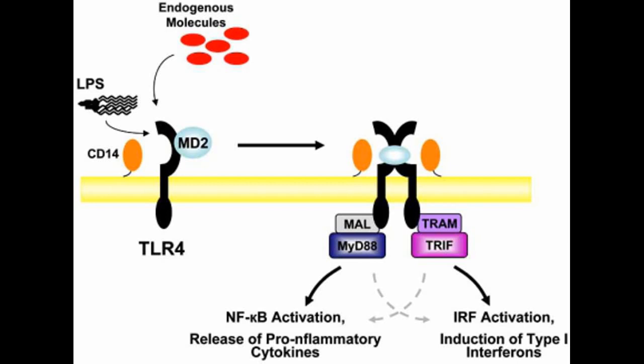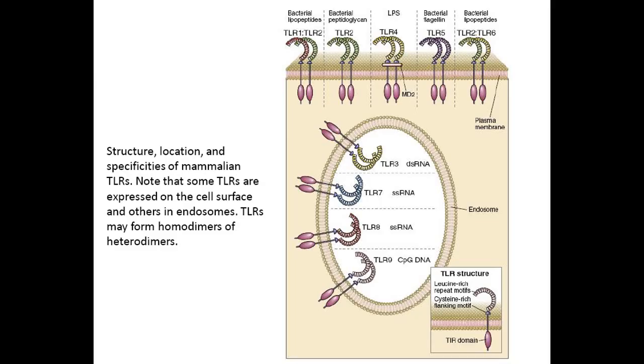Both CD14 and MD2 can also associate with other TLRs. Thus, different combinations of accessory molecules in TLR complexes may serve to broaden the range of microbial products that can induce innate immune responses. TLRs are found on the cell surface and on intracellular membranes, and are thus able to recognize microbes in different cellular locations. TLRs 1, 2, 4, 5, and 6 are expressed on the plasma membrane.